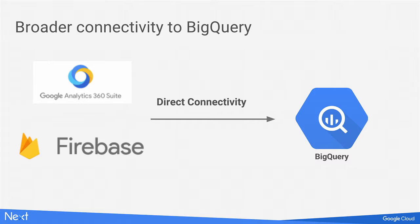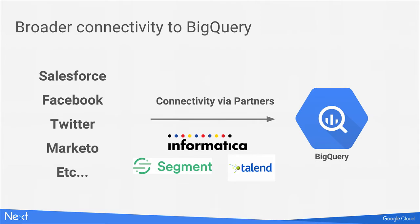BigQuery is just where you load all of your data. What if you want to get your web traffic or mobile traffic in there? Google Analytics 360 customers also have direct connectivity to BigQuery and will export their data there as well. And if you're a CMO or marketer, you need more than just Google properties. To get data from Salesforce, Facebook, Twitter, Marketo, MailChimp, or Eloqua into BigQuery, we have an ecosystem of partners to set up that automated data movement.